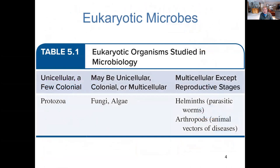As we survey the eukaryotes — looking at those that are microbial in the sense that they're generally smaller eukaryotic cells — this gives an overview of the five major categories: protozoa, fungi, algae, and helminth worms. We'll also talk about some additional arthropods.